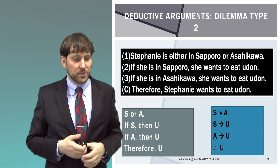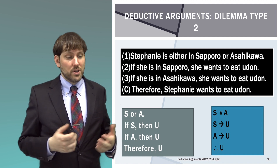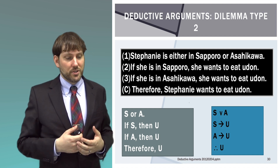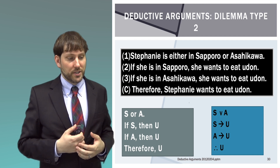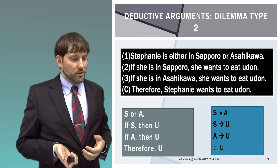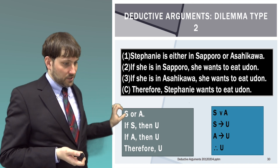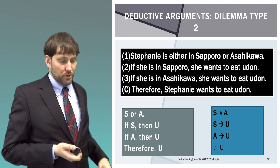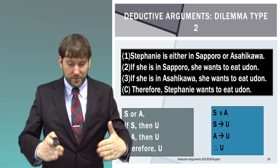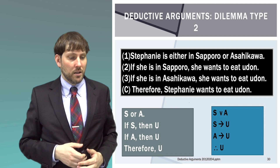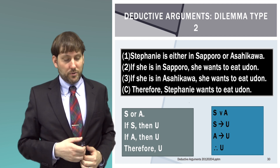There is a second form of dilemma, which is not that different. 'Stephanie is either in Sapporo or Asahikawa. If she is in Sapporo, she wants to eat udon. If she is in Asahikawa, she wants to eat udon. Therefore, Stephanie wants to eat udon.' The pattern is: S or A; if-S then-U; if-A then-U; therefore U. It is similar to the first form, but both IF-THENs have the same outcome.